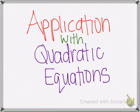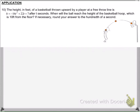This video shows you two examples of solving quadratic equations with some real-life application to them. Go ahead and pause the video and read example 10. This example gives you an equation that can be used to model the height of a basketball as it's being thrown to a basketball hoop — so someone's shooting a basketball.